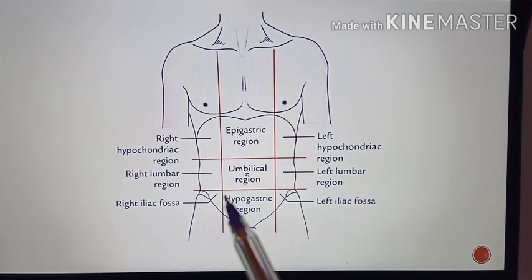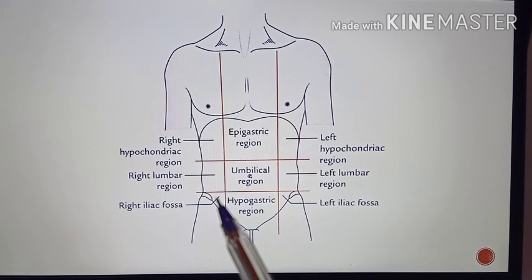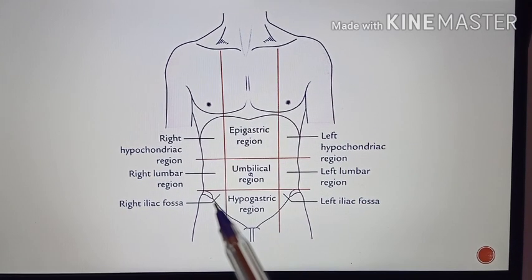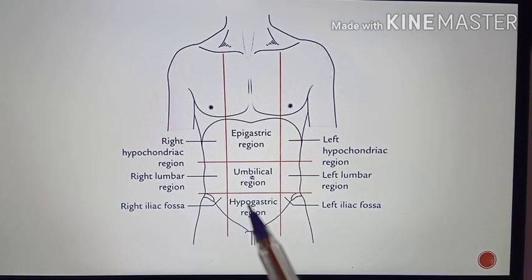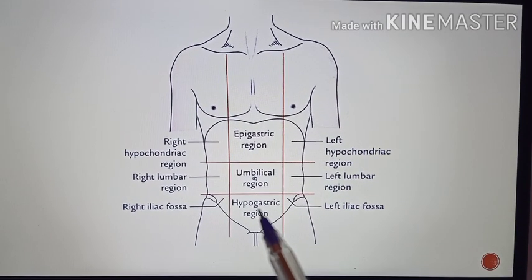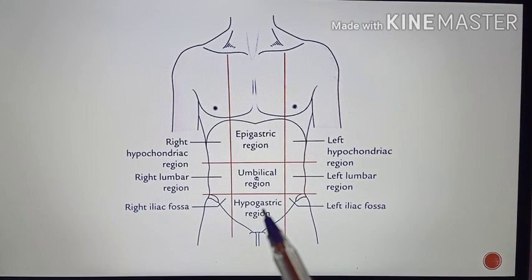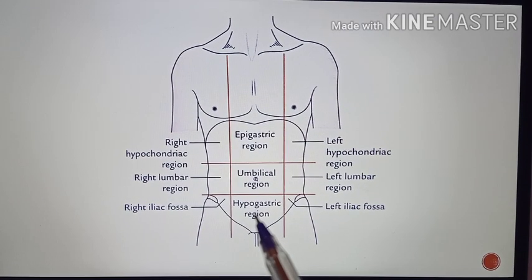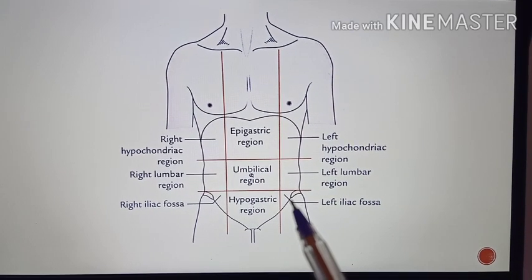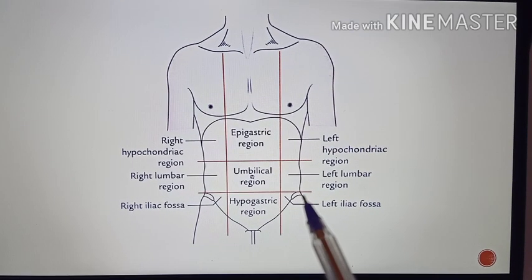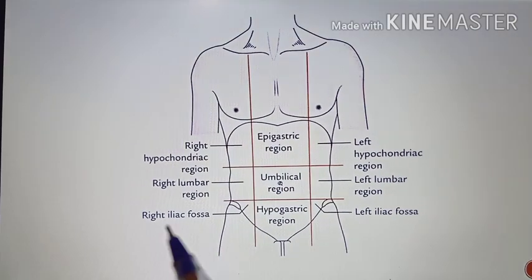Coming to the right iliac fossa, it contains the cecum and the appendix. The hypogastrium contains coils of small intestine, the urinary bladder, and the uterus — if there is enlargement of the uterus, it can be seen in this region. The left iliac fossa contains the sigmoid colon.